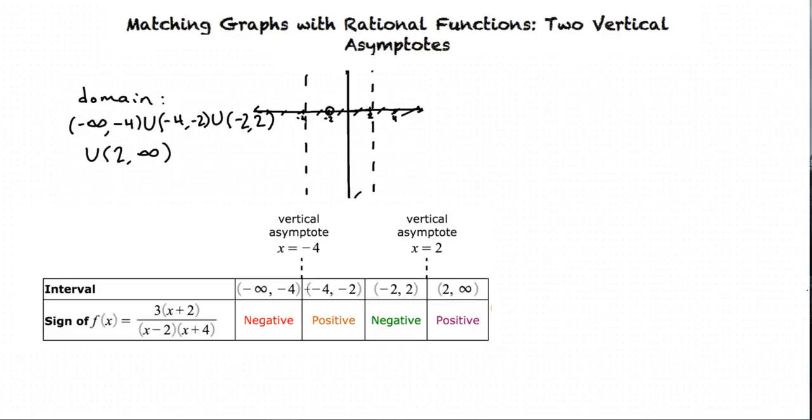For each of these intervals, the function is either negative or positive. Using some test values of x for each interval, such as in the first interval x = -5, in the second interval x = -3, in the third interval x = 0, or in the fourth interval maybe x = 3 or x = 4.